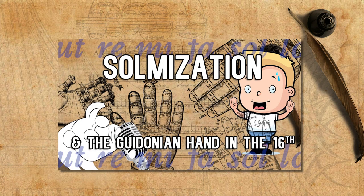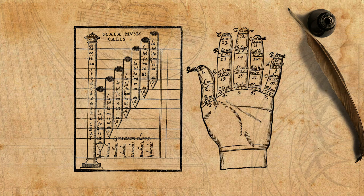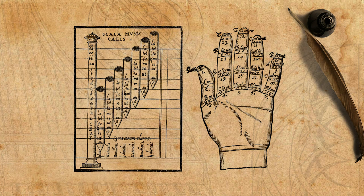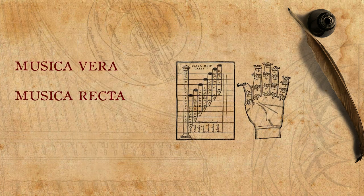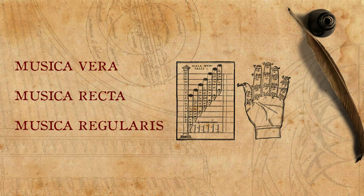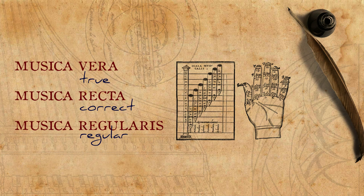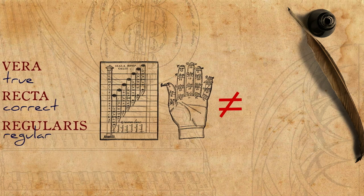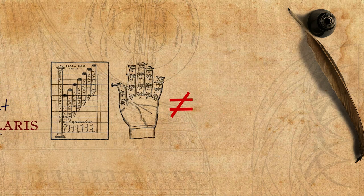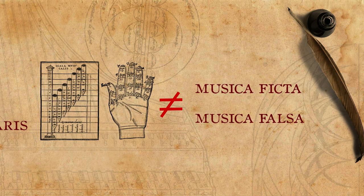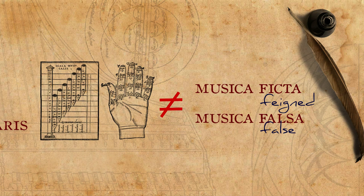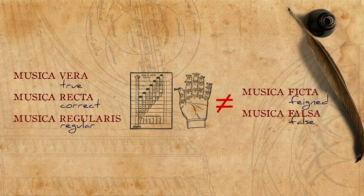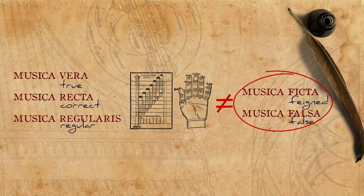In our episode about solmization, we presented the gamut and the Guidonian hand. These both represent a collection of notes, all categorized under terms such as musica vera, recta or regularis — that is, music that is true, correct or regular. Other notes, whether they be in between those notes of the gamut or simply beyond its range, are categorized under terms such as musica ficta or falsa, that is, feigned or false. So, if you can't find a certain note on your hand, you can say that it is probably not in the realm of musica vera, but of musica ficta.